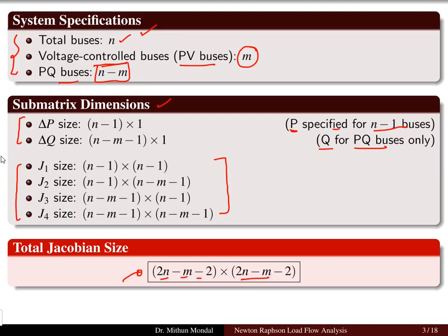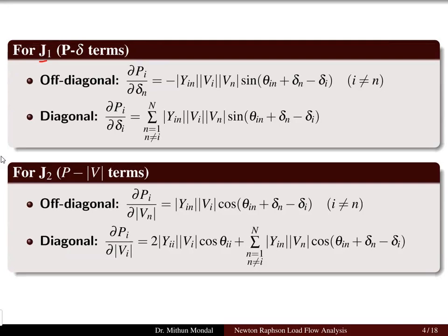So 2n minus m minus 2, where n is the total number of buses, m is the PV bus count, and you have minus 2. The terms J1 to J4 are obtained using differentiation of the power terms. J1 relates P and delta — the off-diagonal terms are the differentiation of power with respect to phase angle, and the diagonal terms are with respect to its own angle.